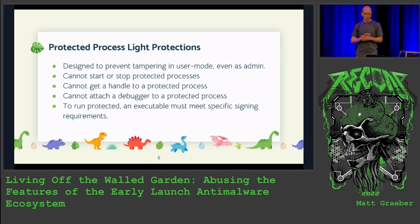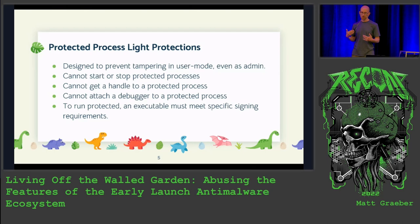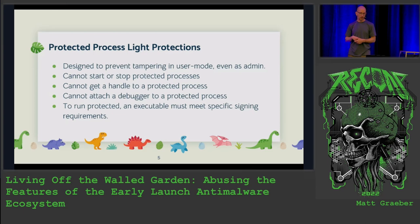So, a quick primer: what are Protected Process Light protections, and what do they aim to protect against? This is an anti-tampering feature designed to protect user mode processes even from a user running as system. I want to highlight this is user mode — exploiting vulnerable drivers is not in scope. An adversary in theory would not be able to stop protected processes, get a handle to them, or attach a debugger to them. All from user mode.